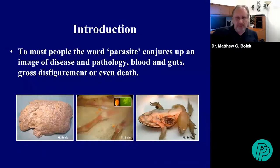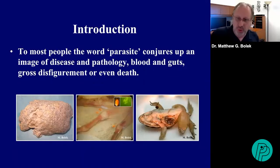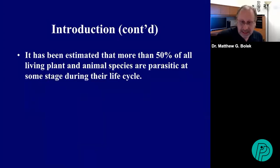To most people, the word parasite conjures up an image of disease and pathology, blood and guts, gross disfigurement, or even death. And in fact, that is true — a million to three million people die of malaria each year. But if we think of parasitism more broadly from an ecological and evolutionary perspective, it has been estimated that more than 50 percent of all living plant and animal species are parasitic at some stage during their life cycle.